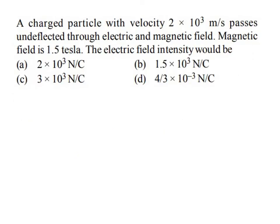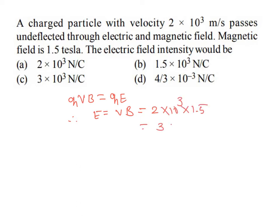Next problem: a charged particle with velocity 2×10³ m/s passes undeflected through electric and magnetic fields. The magnetic field is 1.5 tesla. This is a velocity selector problem where qvB = qE, so E = vB = 2×10³ × 1.5 = 3×10³ N/C. Option C is the right answer.